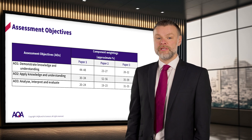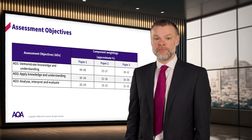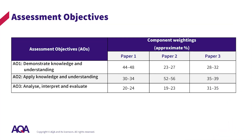There are three assessment objectives in A-Level Biology. AO1 is to demonstrate knowledge and understanding. This is recall of the taught specification and can be subdivided into ideas or processes, techniques and procedures, i.e. experimental or practical work.